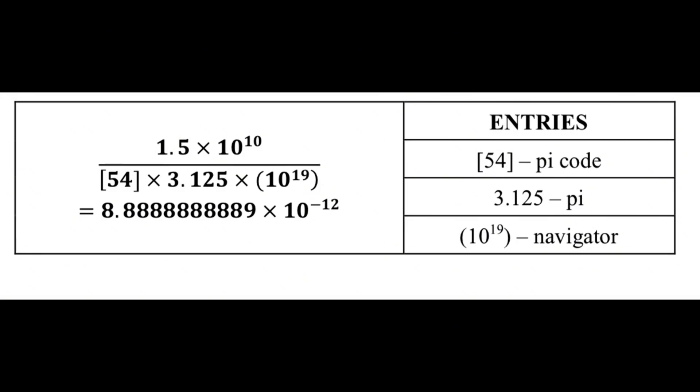For example, using the God equation form, s over p1, p2, p3 equals px, we insert a pi code as p1, the pi value itself as p2, and a navigator as p3. A navigator is always 10 to the power, from 10 to the power 0, 10 to the power 1, to infinity.